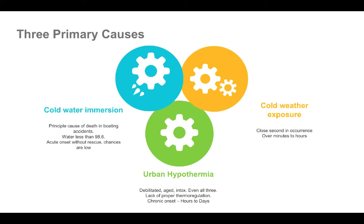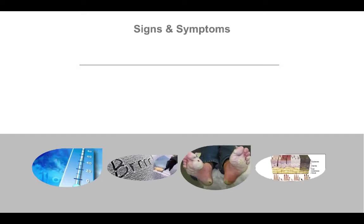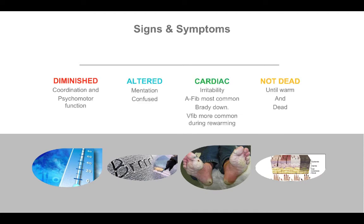Some of the signs and symptoms you're going to see: diminished coordination, diminished psychomotor function, altered mentation — the patient can be confused or even agitated. You'll also hear about cardiac irritability — patients who go into a-fib, v-fib, or v-tach. Sometimes they'll be in a-fib and it will break on its own. V-fib is more common during the re-warming phase, which is why patients are re-warmed slowly.